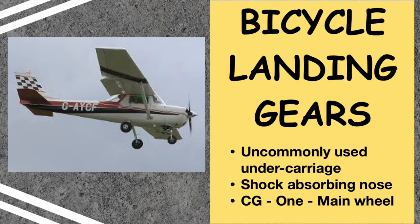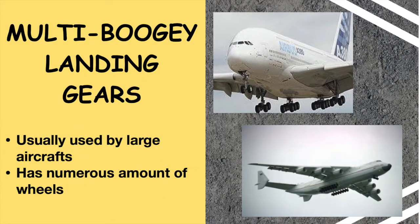The bicycle landing gear is a relatively uncommon landing gear choice. It comprises two main gears — one forward and one aft of the center of gravity — along the aircraft's centerline. Two small outrigger gears are positioned along the wing to keep the plane from tilting sideways. If there are more than two wheels attached to the main landing gear, the layout is called a bogey. Larger aircraft usually have a multi-bogey layout with a great number of wheels on each part of the landing gear.